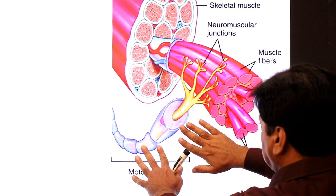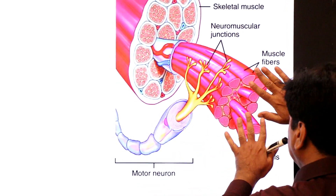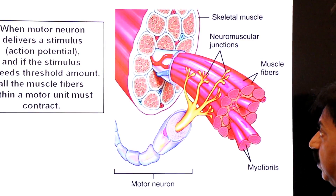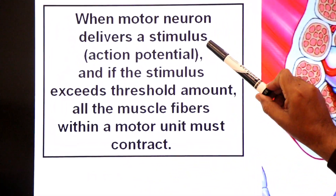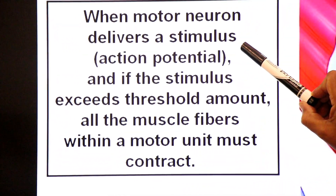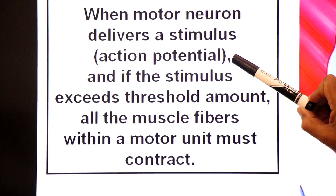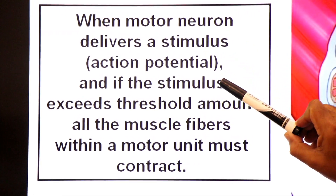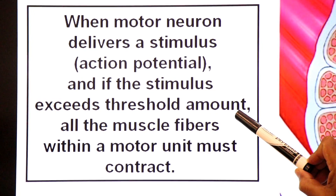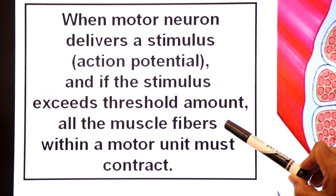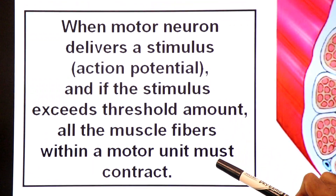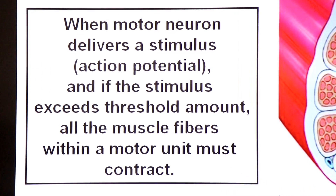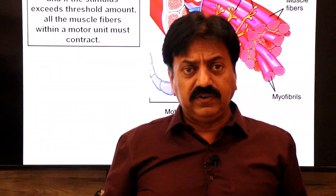If the stimulus exceeds the threshold amount, all the muscle fibers within a motor unit must contract. This is the All or None response.